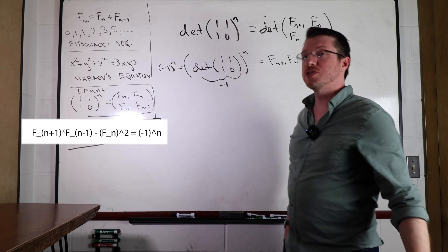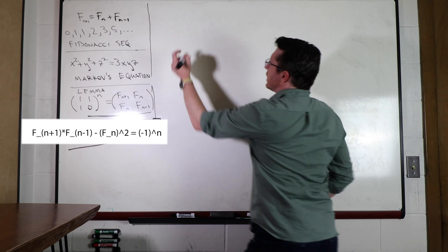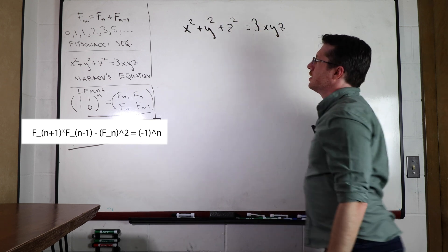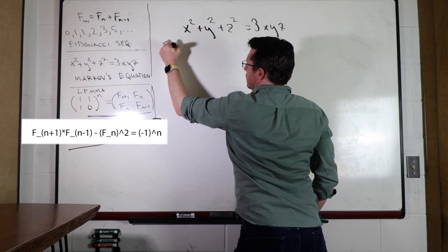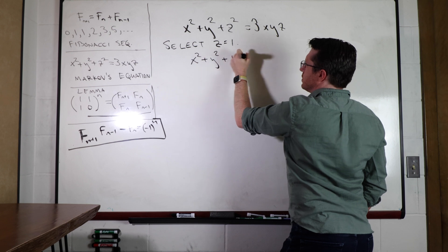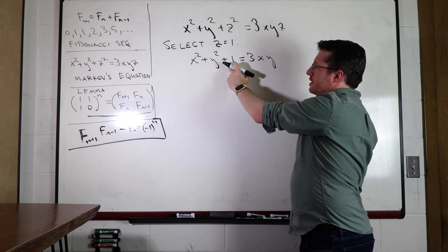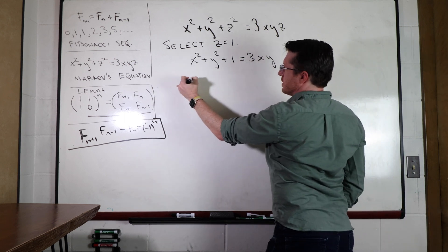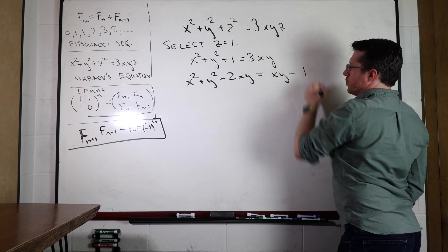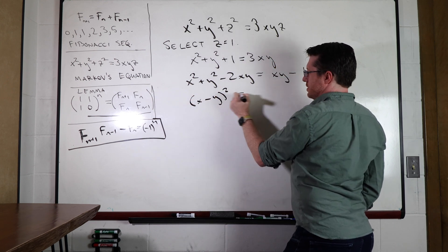We're going to use this identity to solve Markov's equation. Starting with x² plus y² plus 1 equals 3xy, I move terms to rewrite it as x² plus y² minus 2xy equals xy minus 1, which factors as (x minus y)² equals xy minus 1.